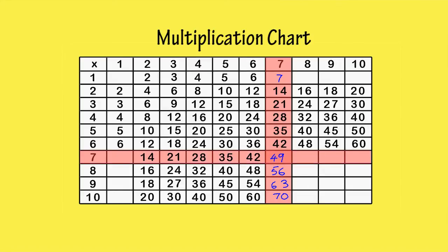We can also complete the 7th row. 1 times 7 is 7. The next 6 boxes are already filled in, which makes our job easy.